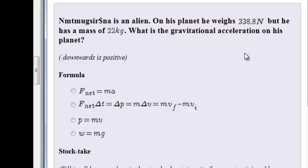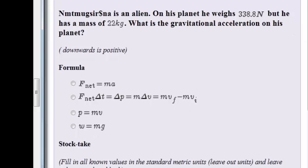Mug-sir-na is an alien. On his planet, he weighs 338.8 newtons, but he has a mass of 22 kilograms. What is the gravitational acceleration on his planet?